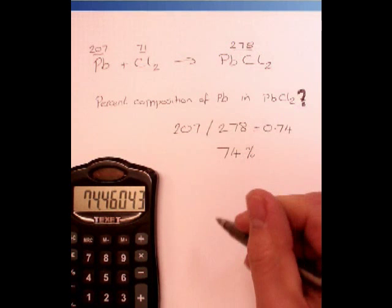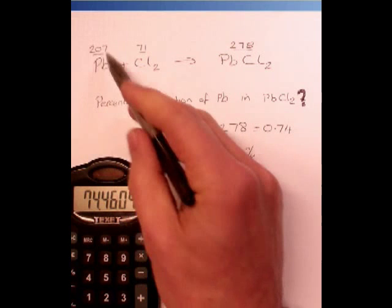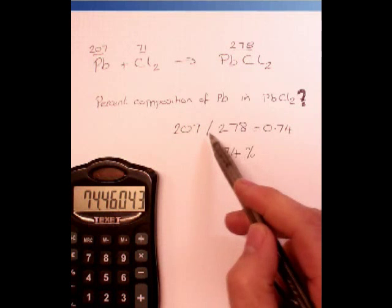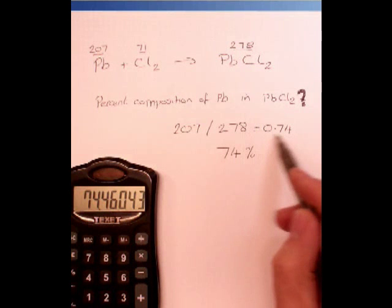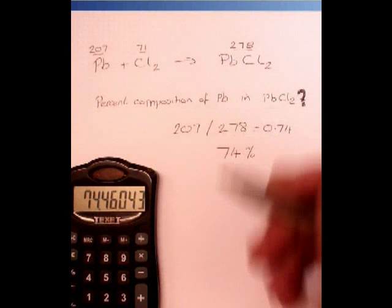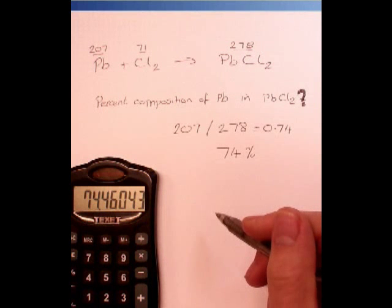It really is as simple as that. Lead is 207 out of a total of 278. So, 207 divided by 278 gives me a fraction. Multiply by 100 to find out percent out of 100 and you're done.